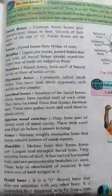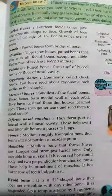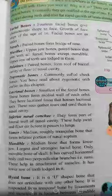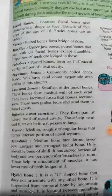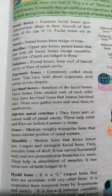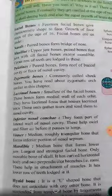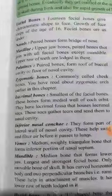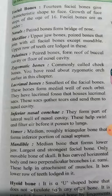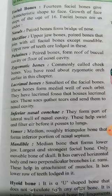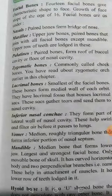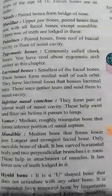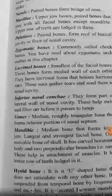There are 14 facial bones which give the characteristic shape to the face. Growth of the face stops at the age of 16. The facial bones include: nasal, maxilla, palatine, zygomatic, lacrimal, inferior nasal conchae, vomer, mandible, hyoid, and ear ossicles.